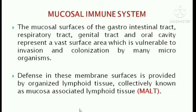The mucosal surface of the GI tract, respiratory tract, genital tract, and oral cavity represent a vast surface area which is vulnerable to invasion and colonization by many microorganisms. The defense in these membrane surfaces is provided by organized lymphoid tissues collectively known as the Mucosa-Associated Lymphoid Tissue. Whenever a mucus membrane is present, it is also working in protection or response against microorganisms.